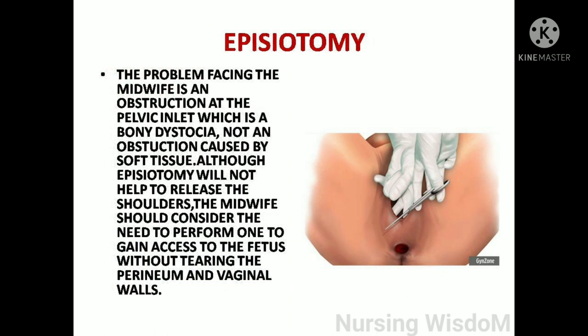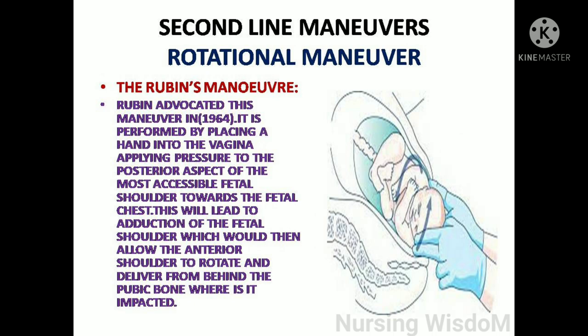Regarding episiotomy: the problem is an obstruction at the pelvic inlet — a bony dystocia, not soft tissue obstruction. Although episiotomy will not help release the shoulders, it should be considered to gain access to the fetus without tearing. Episiotomy is not performed routinely for all patients. For multiparous mothers, first-line maneuvers can be applied without episiotomy. However, before performing second-line maneuvers, episiotomy must be performed because the hand will be inserted into the vagina, requiring more space. Episiotomy provides adequate space and protects against perineal tears.